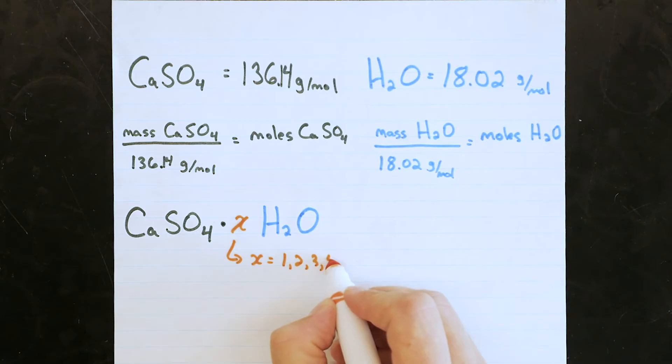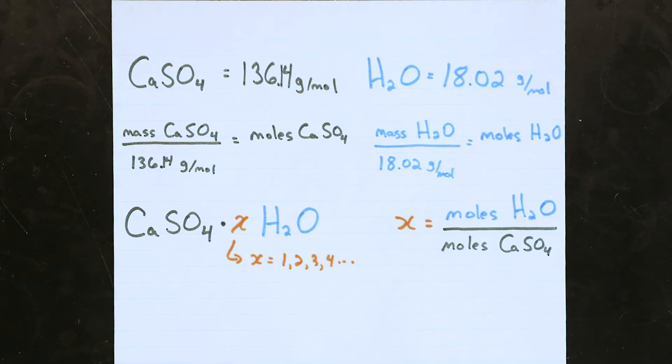But if the number of water molecules is, say, twice as big, then there are two water molecules for every calcium sulfate, and so on. The number of moles of water by the number of moles of calcium sulfate will tell you what this ratio is, and you're done.